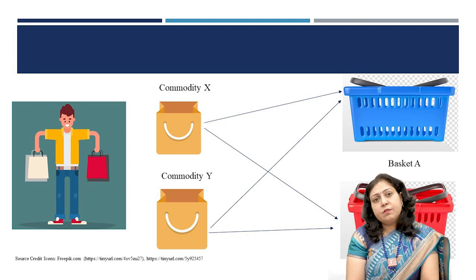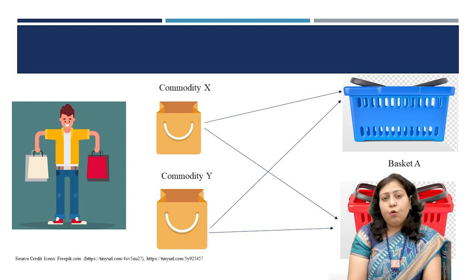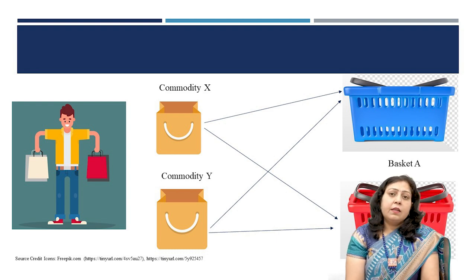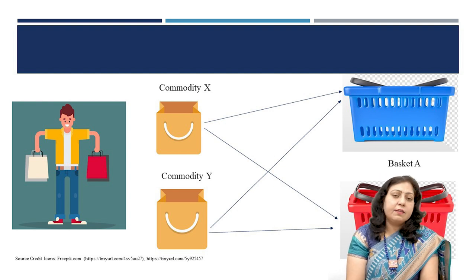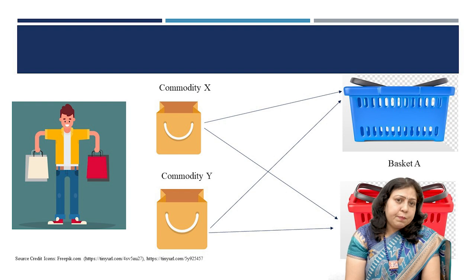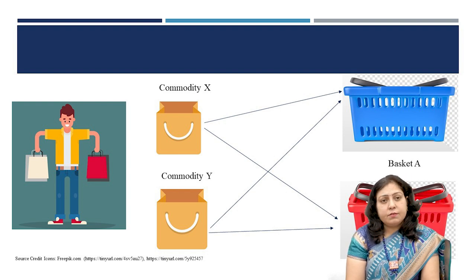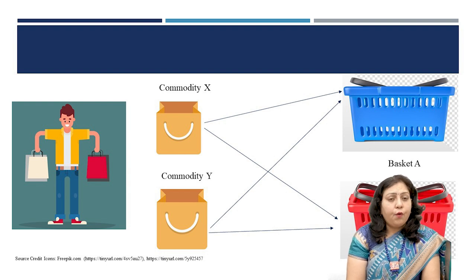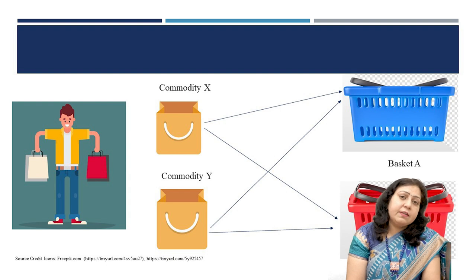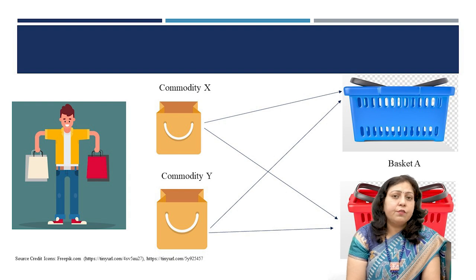If Mr. P chooses basket A over basket B, then Mr. P reveals or communicates his preference for basket A. Mr. P might do this for two reasons: either he has a liking for basket A of goods, or basket A is relatively less expensive than the other.